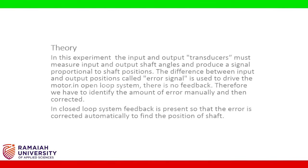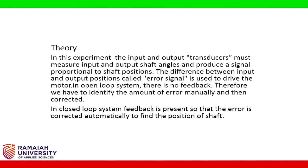Let us discuss about the theory behind this experiment. The input and output transducers must measure input and output shaft angles and produce a signal proportional to shaft positions. The difference between input and output positions, called error signal, is used to drive the motor. In open loop system, there is no feedback, so we have to identify the amount of error manually and then correct it. In closed loop system, feedback is present so that the error is corrected automatically to find the position of the shaft.